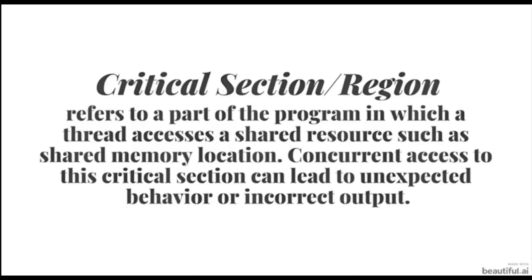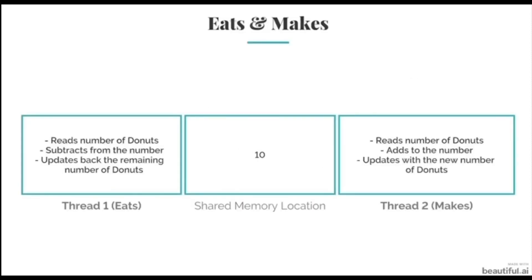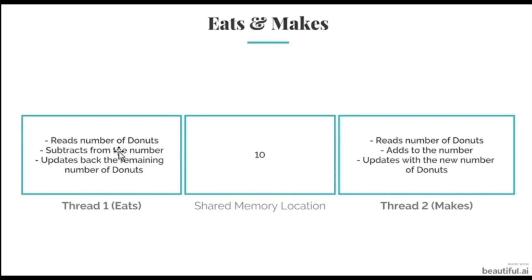Next we have critical section, or critical region. This term refers to a part of the program in which a thread accesses a shared resource, such as the shared memory location — in our case, the number of donuts. Concurrent access to this critical section can lead to many errors. In our example, the critical sections are where thread one reads and updates the shared memory, and where thread two does the same. The critical sections for thread one and two are similar here, but keep in mind this is not always the case.